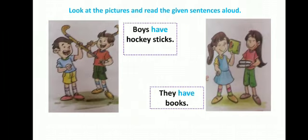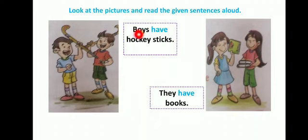Next picture में — boys के लिए he use होता है, but यहाँ पे condition क्या है? यहाँ पे दो boys हैं, जो plural form होगा। Boys means more than one. So उनके लिए we या they use होगा। We के साथ have use होगा। So boys have hockey sticks.